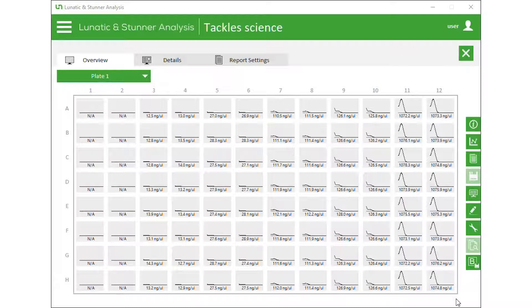Once Lunatic is done measuring, it passes the results over to the analysis software. The overview of the plate shows the concentrations and the absorbance spectra from all the samples. If everything looks good, we can just export the data to a report from here. But let's zoom in to look closer at the results.